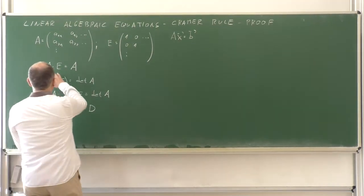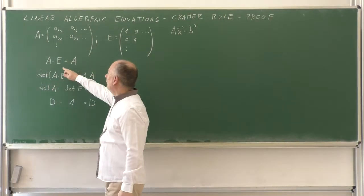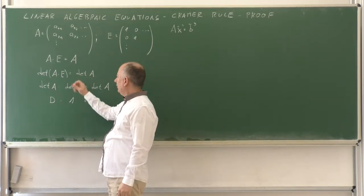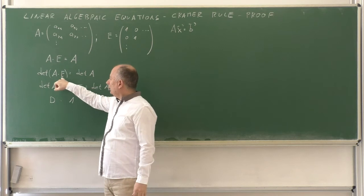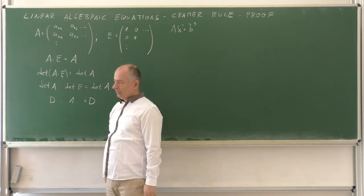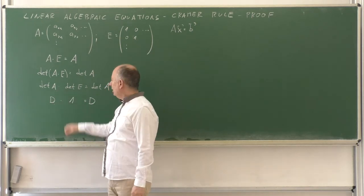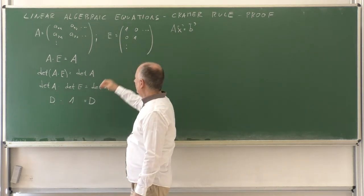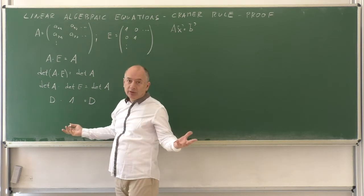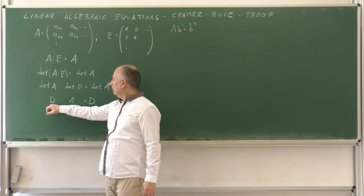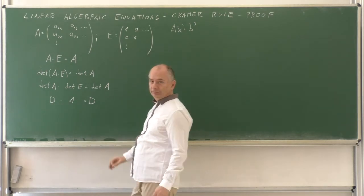And the determinant of the product, well, if the two matrices are the same, then the determinant must be the same. And the determinant of the product is equal to the product of the determinants. We denoted the determinant of A as D, and the determinant of E is obviously 1. So, we have a trivial, stupid result. D times 1 is D. OK. This is still not the Cramer's rule.